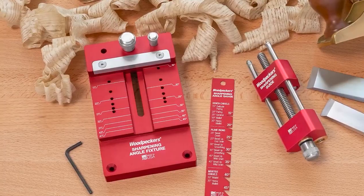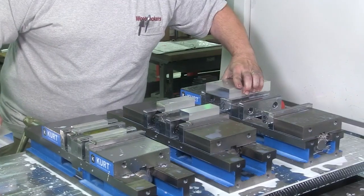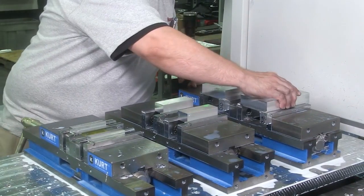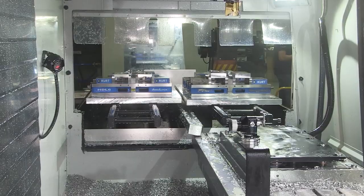First, we begin on the sharpening angle fixture by milling solid blocks of aluminum at one of our state-of-the-art CNC mills.